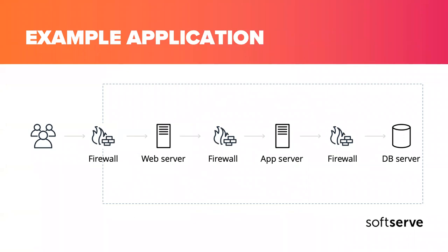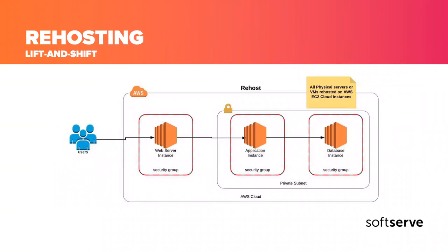We'll discuss this on a simple example infrastructure. In this infrastructure, we have a pretty standard setup: a web server, application server, and database server instance. All these layers are separated from each other by firewalls. This is a typical infrastructure used on-premises for some mid-sized customers. The first approach we are going to discuss is rehosting, or the lift and shift approach.